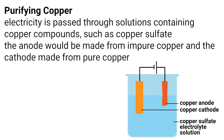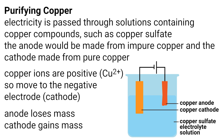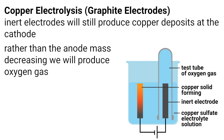Copper can be purified by electrolysis. Electricity is passed through solutions containing copper compounds, such as copper sulphate. In this process, the anode will be made from impure copper, and the cathode is made from pure copper. Copper ions are positive, so they move to the negative electrode. During electrolysis, the anode loses mass as copper dissolves, and the cathode gains mass as the copper is deposited here. We can also use inert electrodes, such as graphite electrodes, to produce copper deposits. However, rather than the anode mass decreasing like it does in copper purification, we produce oxygen gas.